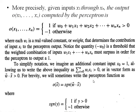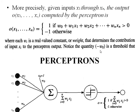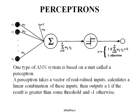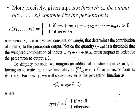We can also write the Perceptron function as: output of all inputs vector equals the sign of the weights vector dot the input vector. Where the sign function gives output 1 when y = w·x is greater than 0, and minus 1 otherwise. This is once again the basic unit of the artificial neural network.